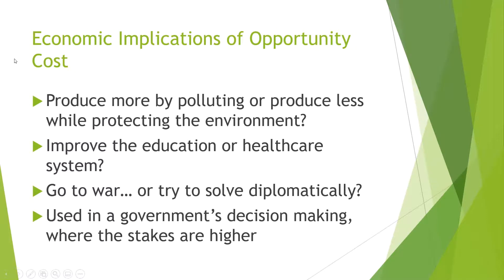Now, some of the economic implications of opportunity costs where the stakes are higher — from the government, for example. Producing more by polluting the environment, or producing less while protecting the environment using greener technologies — factories and governments have to decide this. They have to weigh how much they value the revenue earned from producing extra versus how much they value protecting the environment in the long run. By using greener technology, you're going to be more sustainable, able to produce more in the long run while protecting the earth from becoming a giant wasteland.